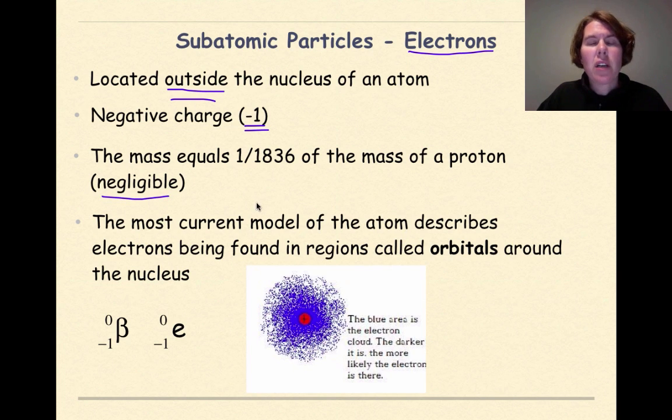So the mass of an electron, it does have a mass, is very tiny. Now the most current model of the atom describes an electron as being found in regions called orbitals around the nucleus. So if we look at something known as the wave mechanical model right here, we can see a positively charged nucleus in the center, and then the blue dots around them are representing different electrons. And the more dense the blue cloud is closer to the nucleus, the more likely you are to find an electron. And as we go farther and farther away from the nucleus, the less likely we are to find an electron.